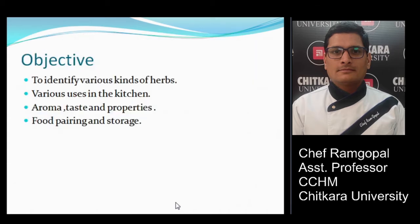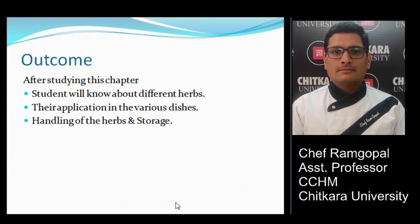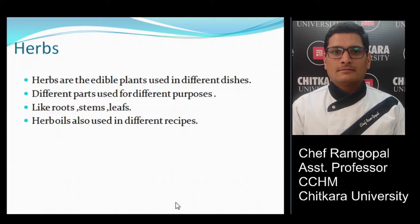The objective of this chapter is to understand and identify the various kinds of different herbs used in the kitchen — their aroma, taste, properties, food pairing, and storage. After completion of the chapter, you need to understand the different kinds of herbs, their application in various dishes, handling, and storage.